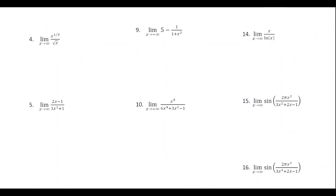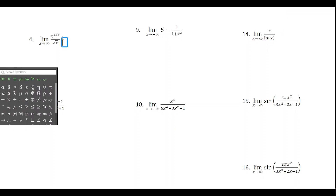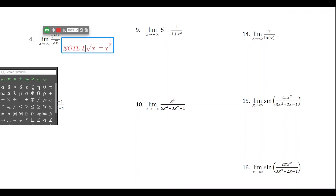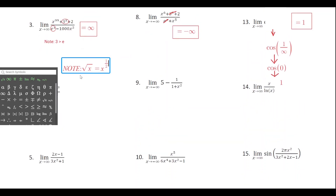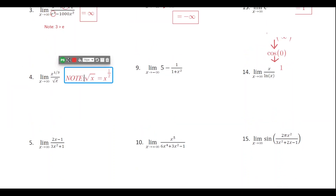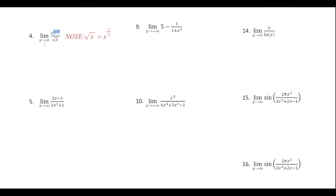For number four, we've got x to the one third over the square root of x. Anytime you see the square root of x or any root of x, rewrite it as a rational exponent. The square root of x is x to the one half. Getting in this habit will really help you in calculus. We need to compare the degrees: one half is bigger than one third, so the denominator has the larger degree and the value of the function approaches zero. The limit as x approaches infinity is zero.